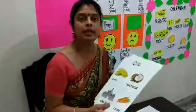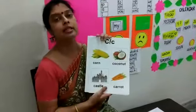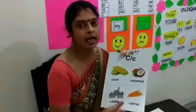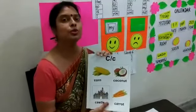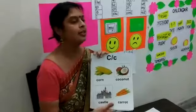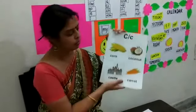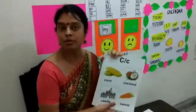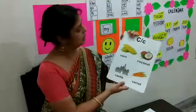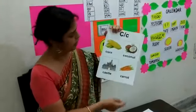Now the C story — the Copy Cat. Cleo and Clyde were two cats, best friends, and they used to copy each other. These are the vocabulary words from the C story.